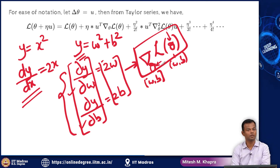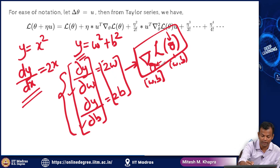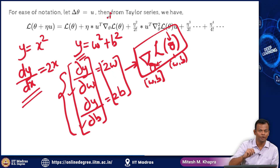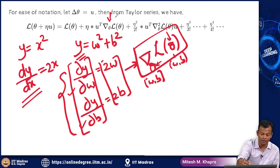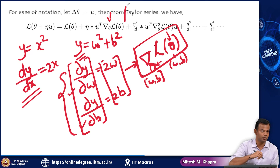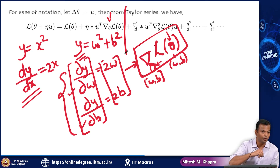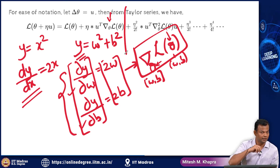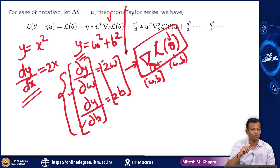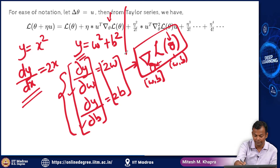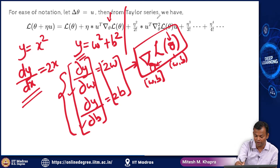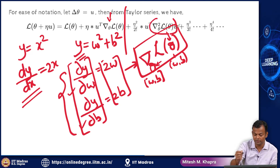You have the loss function L(theta) and you are taking the gradient of the loss function with respect to theta, and we know that theta is nothing but (w, b). So this is just a vectorial way of writing that you are taking the partial derivatives with respect to w and b and putting those partial derivatives in a vector — that vector is called the gradient.